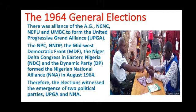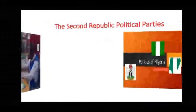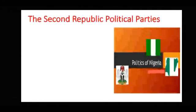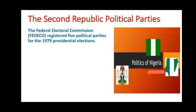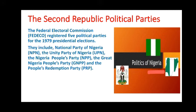Now let's look at the second Republic political parties. In the second Republic, there was FEDECO — the Federal Electoral Commission — which was the umpire responsible for registering political parties and conducting elections. FEDECO registered five political parties for the 1979 elections: the NPN, UPN, NPP, GNPP, and PRP.